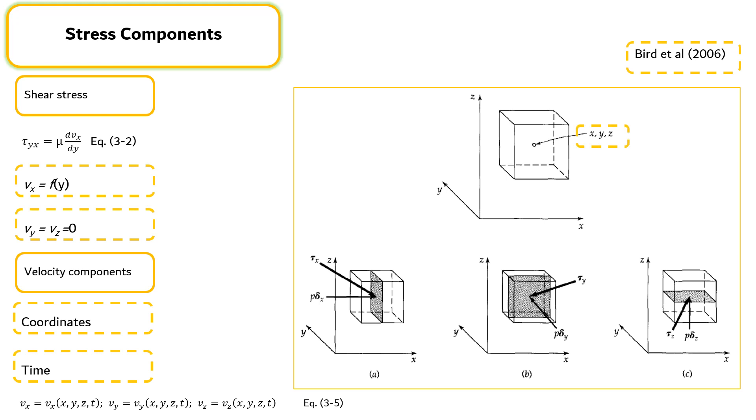At any instant of time, we can slice the volume element in such a way as to remove half the fluid within it. As shown in the figure, we can cut the volume perpendicular to each of the three coordinate directions in turn. We can then ask what force must be applied on the shaded surface in order to replace the force that had been exerted on that surface by the fluid that was removed.